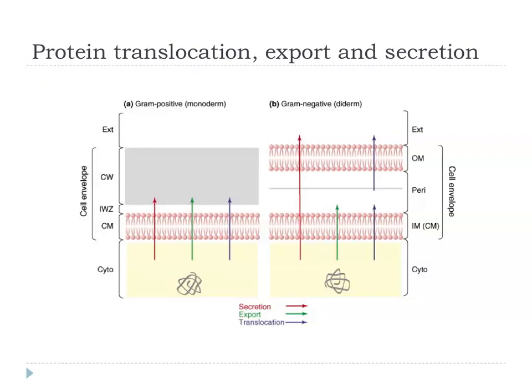Before we start, we need to look at what protein secretion, export, and translocation actually mean. If we look at bacterial cell envelopes, they come in two major varieties: the gram-positive cell envelope and the gram-negative cell envelope. Sometimes the terms monoderm and diderm are used instead of gram-positive or gram-negative to describe the construction of the cell envelope.